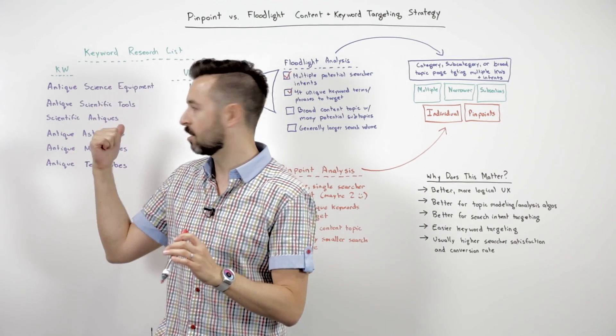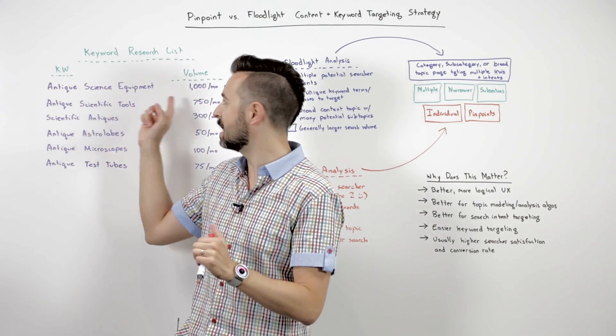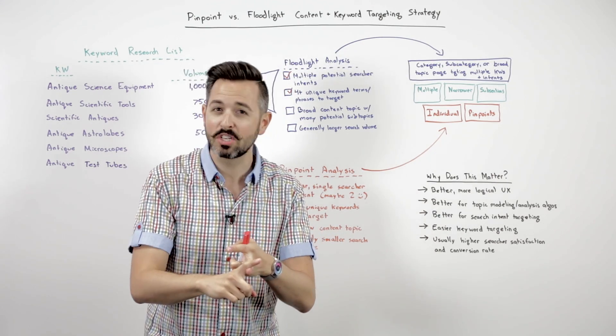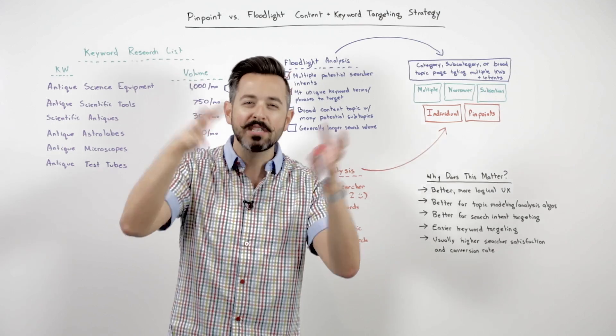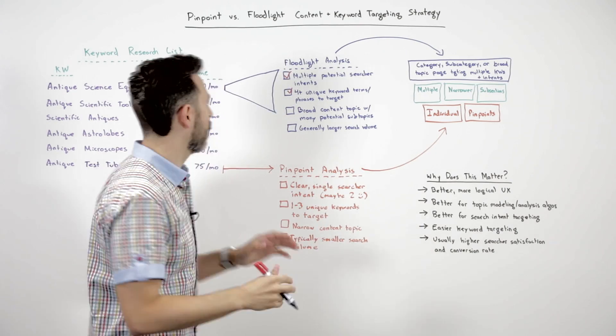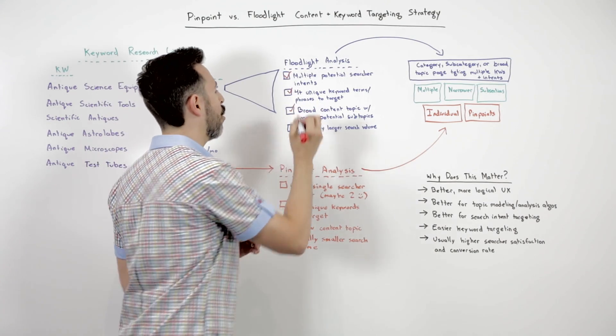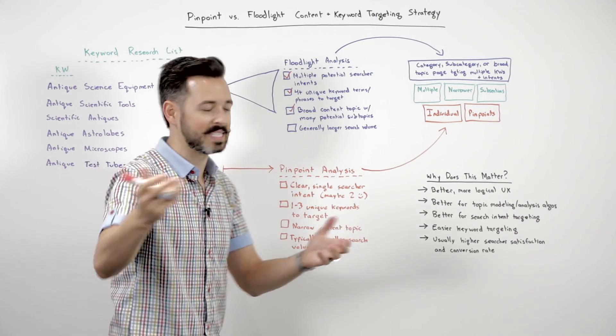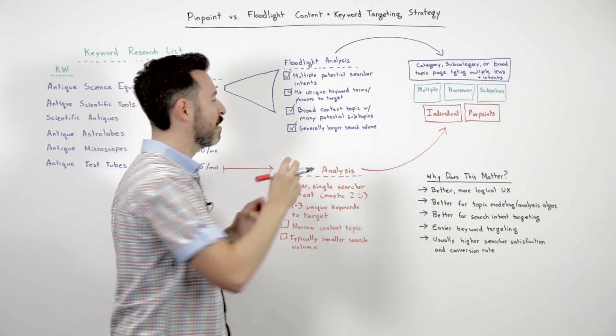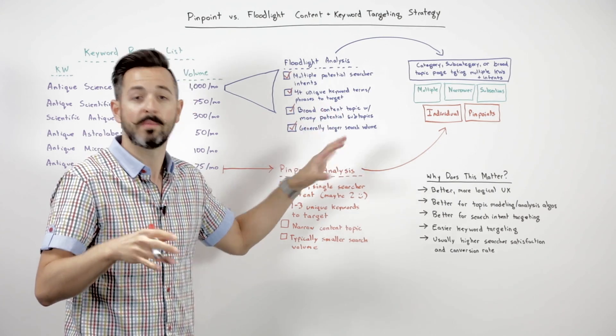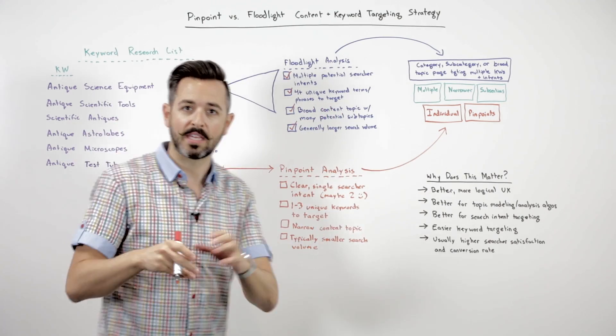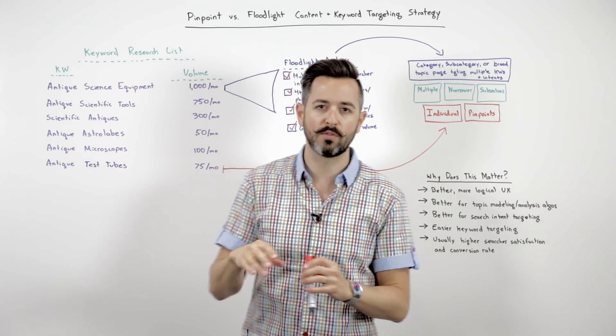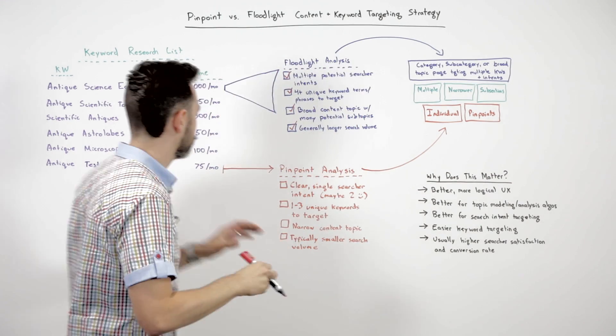Are there four or more approximately unique keyword terms and phrases to target? Absolutely. In fact, there's probably more than that. Antique science equipment, antique scientific equipment, 18th century scientific equipment, all these different terms and phrases. Is this a broad content topic with many potential subtopics? Again, yes. And are we talking about generally larger search volume? Again, yes. This is going to have a much larger search volume than some of the narrower terms and phrases. That's not always the case, but it is here.